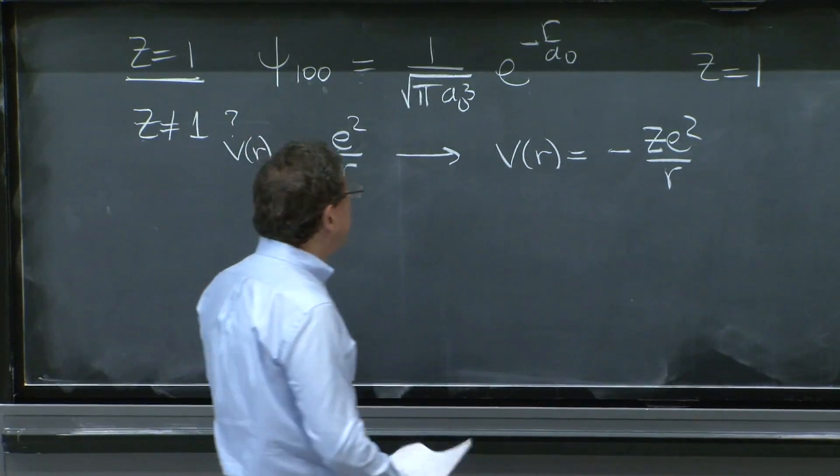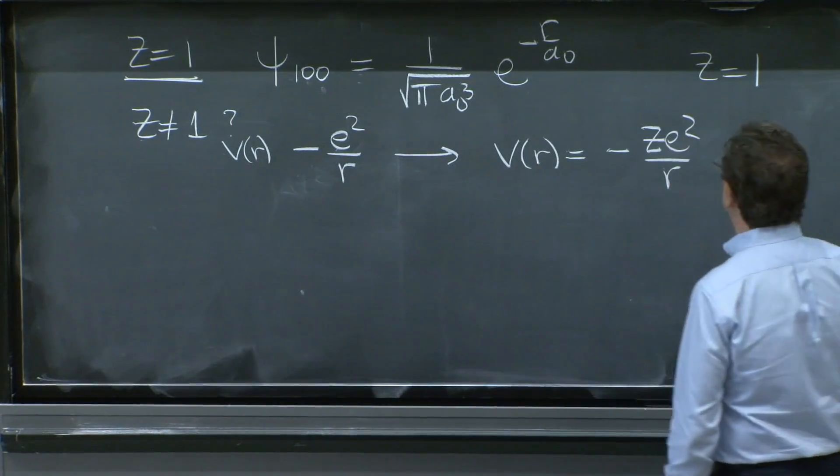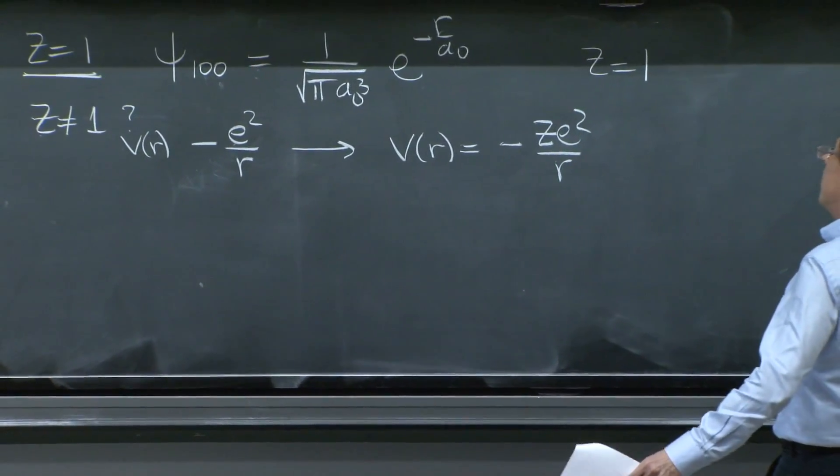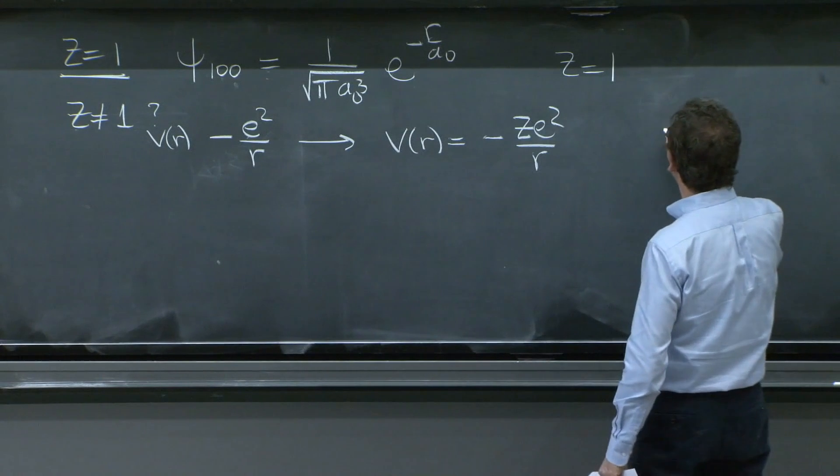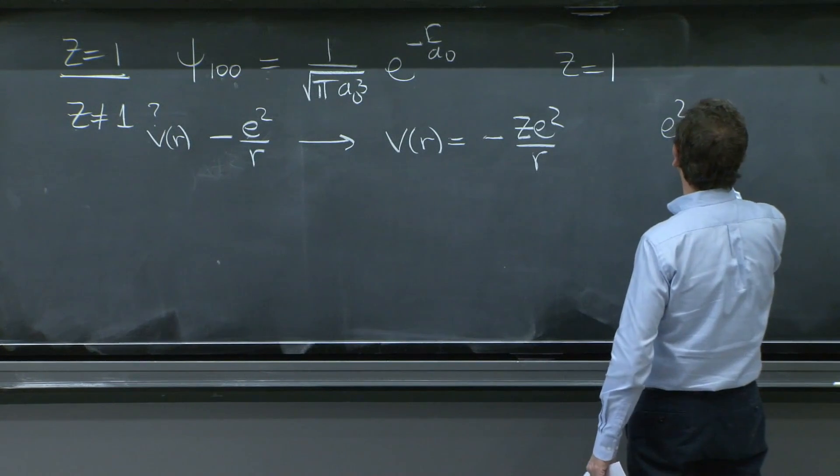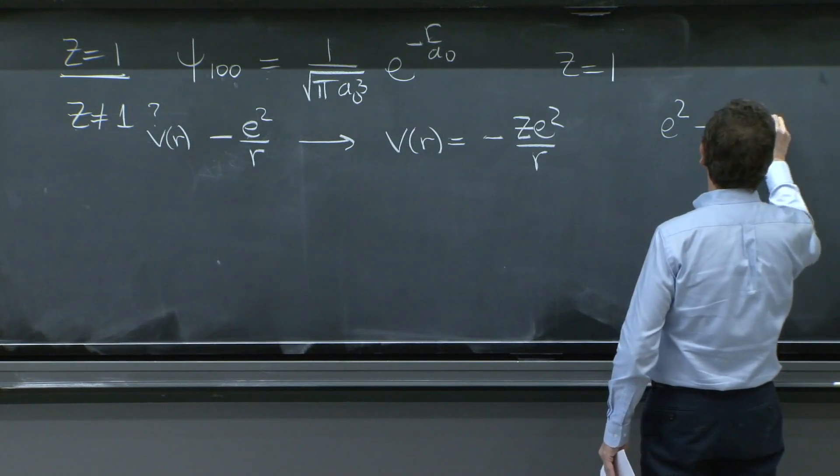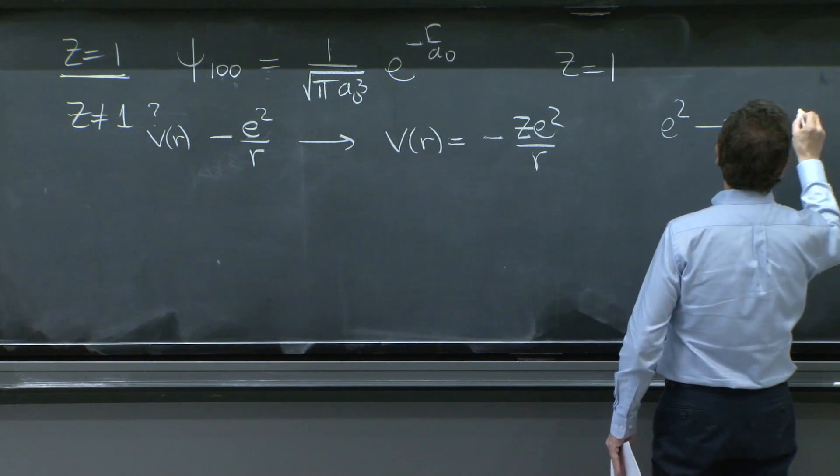Because now you have a nucleus with z protons interacting with one electron. So that's how it changed. So naturally, what seems to be the change here, and you could imagine just solving it without the z and then adding the z, is that everywhere that you have e squared, you should put z times e squared.